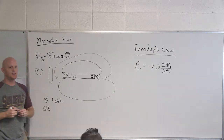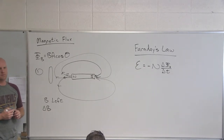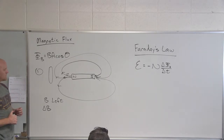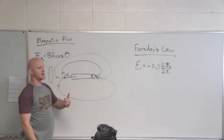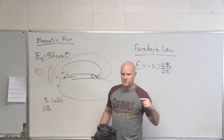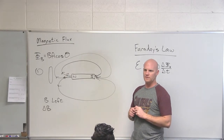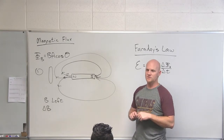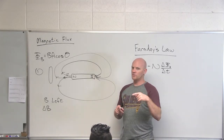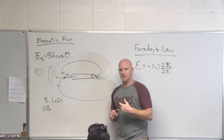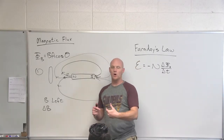Now we're going to define something else: the change in the strength of the magnetic field. What direction does that point? Is the magnetic field growing or shrinking? Growing. It's analogous to velocity versus acceleration — if I'm traveling in a direction and speeding up, then acceleration also points the same way. Change in velocity is the definition of acceleration, so if velocity points one way and it's getting faster, the change in velocity points the same direction.